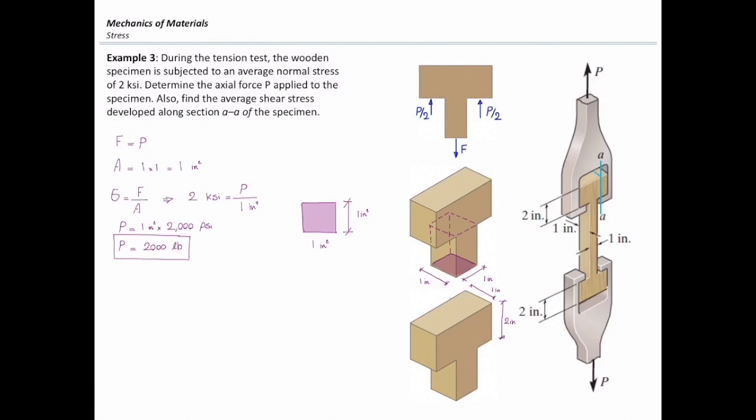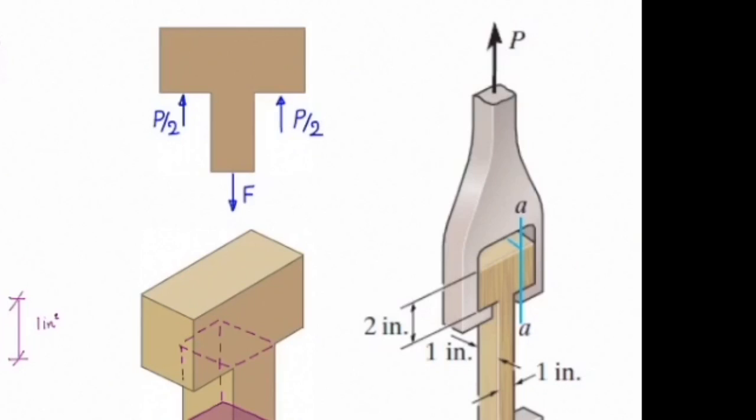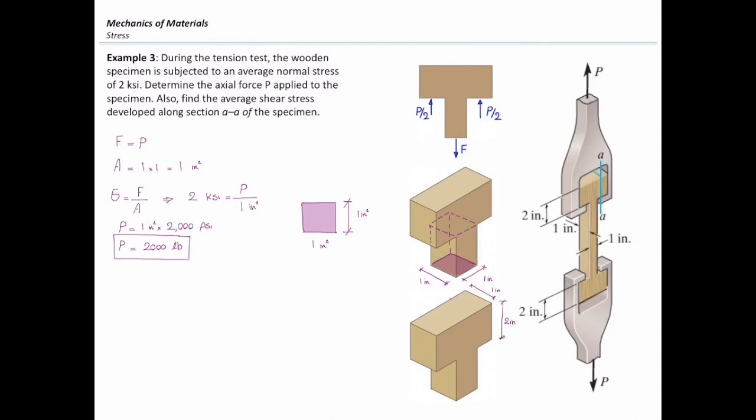Now, I would like to answer the second part. What would be the stress developed on section A on the side of this T section? I think that I can follow the same procedure. I have just one equation. Stress is equal to force divided by area. I can determine how much is force and I need to determine what is area.